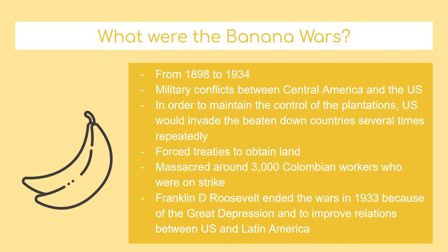There were many incidents of mass murder, including this one in Colombia, where 3,000 workers were on strike and were killed in order to maintain peace. Because these countries were so weak already, the U.S. would force them into giving up more and more land with forced treaties.